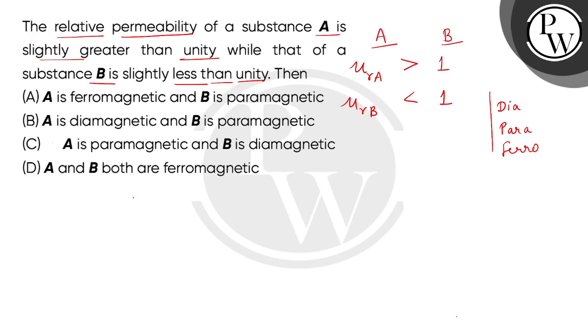So children, first of all, we will see what is the meaning of permeability. Permeability basically is the measure of the ability to support - now what will you support? Within any magnetic substance, within itself, how many magnetic fields can develop?